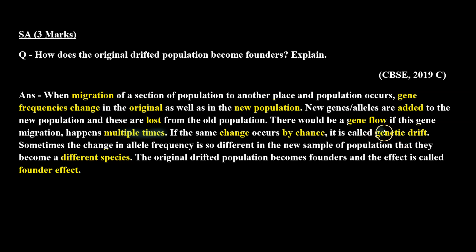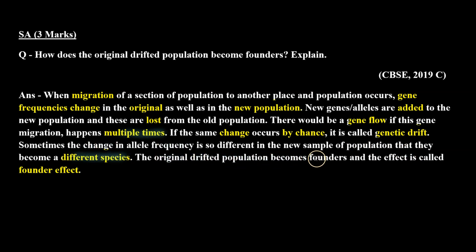If the same change occurs by chance, it is called genetic drift. Sometimes the change in allele frequency is so different in the new sample of population that they become a different species. The original drifted population becomes founders and the effect is called founder effect. I hope this question is clear to you. Thank you.